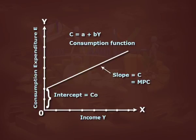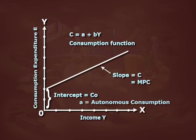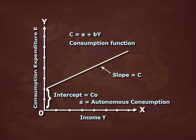Here, A is the autonomous consumption — that is, even when income is 0, the constant amount of consumption a person has. B is the propensity to consume which depends on income Y; as income increases, there is an increase in consumption at a constant rate. Thus, B is known as marginal propensity to consume, which lies between 0 and 1 and is constant for any level of income.